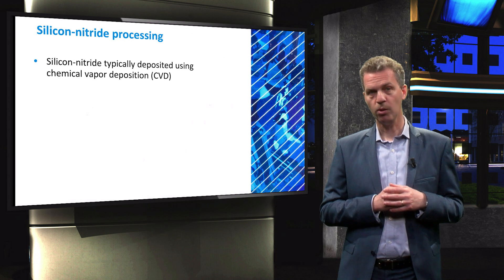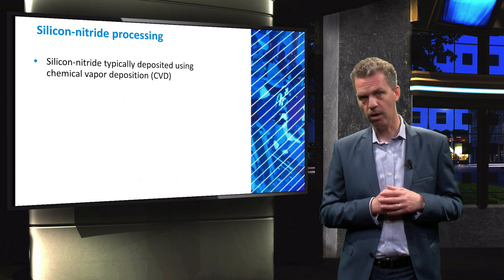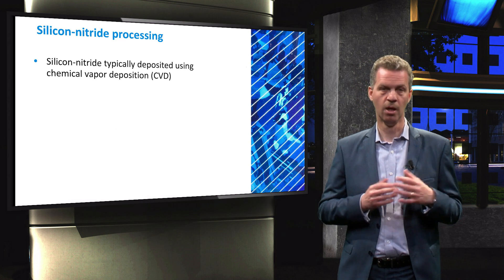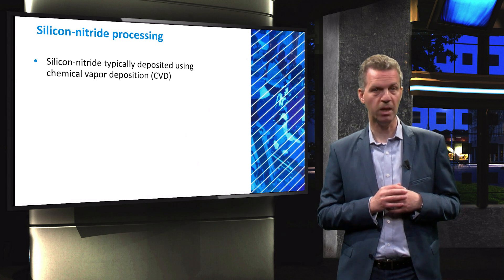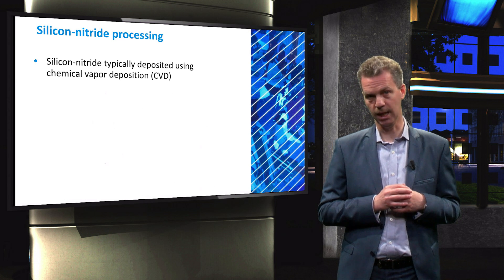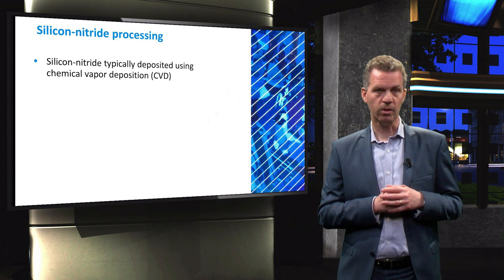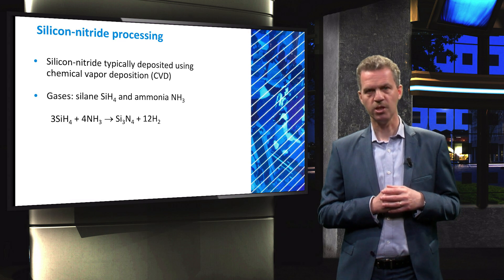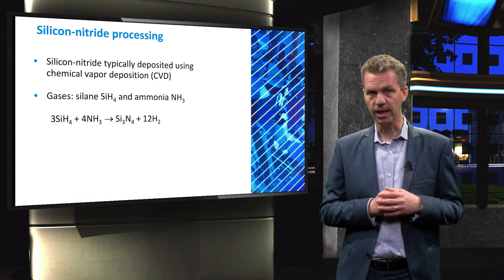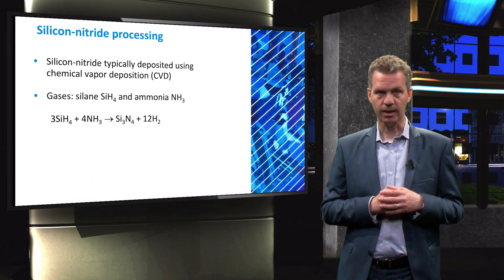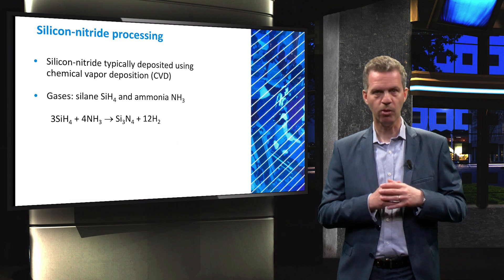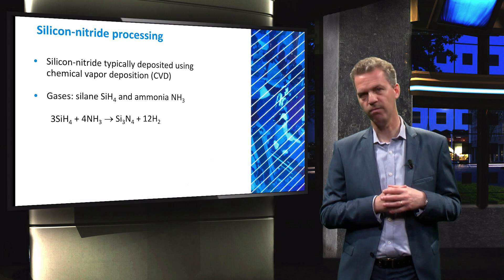Silicon nitride can be deposited on the crystalline silicon wafer by means of plasma-enhanced chemical vapor deposition, usually abbreviated to PECVD. This process will be discussed in detail in another video. In this deposition process, the silicon containing gas silane and nitrogen containing gas ammonia will decompose in a plasma and deposit a silicon nitride layer on the wafer surface.